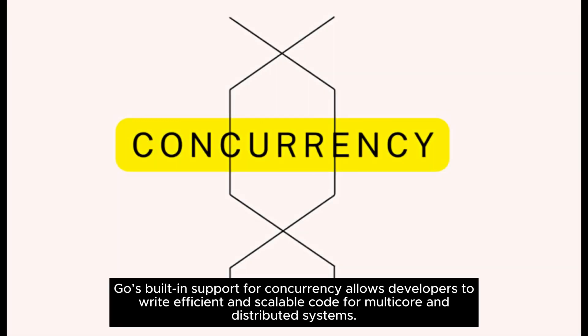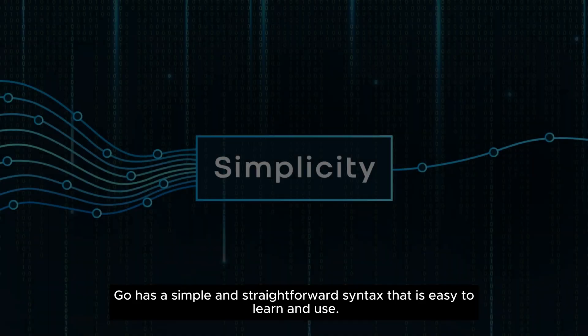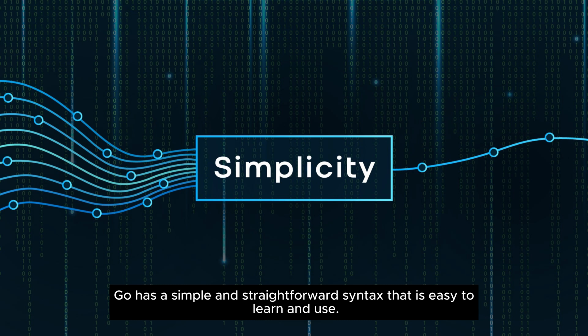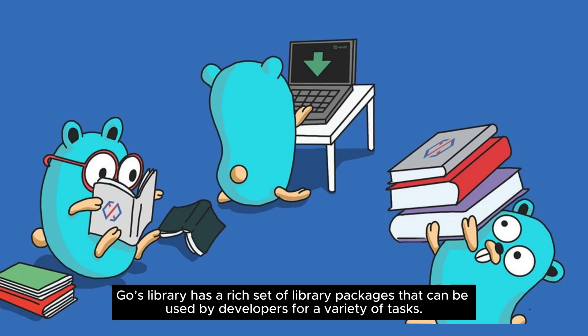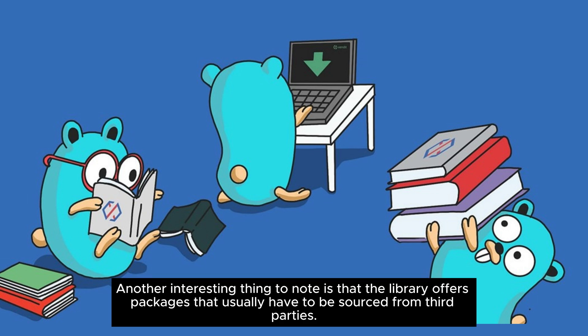Key features of Golang. Concurrency support: Go's built-in support for concurrency allows developers to write efficient and scalable code for multi-core and distributed systems. Simplicity: Go has a simple and straightforward syntax that is easy to learn and use, making it a good choice for both beginners and experienced programmers. Powerful standard library: Go's library has a rich set of packages for a variety of tasks, including packages that usually have to be sourced from third parties.